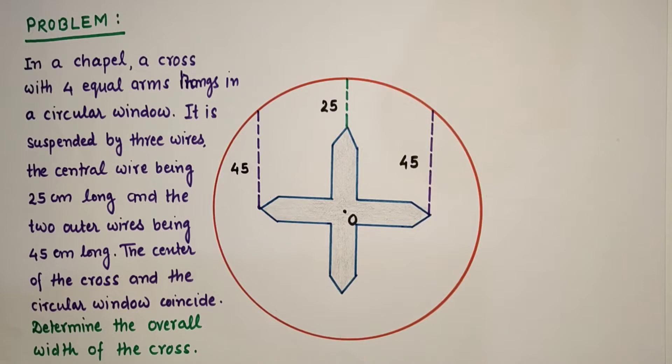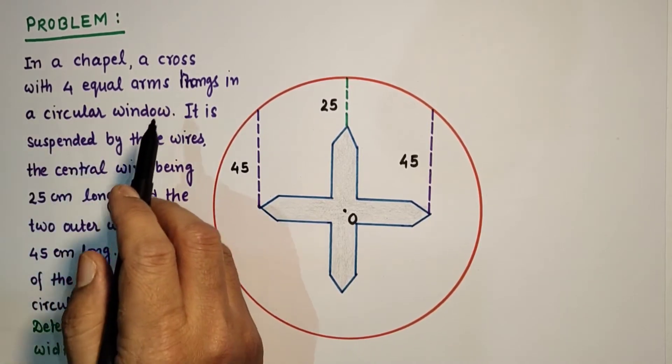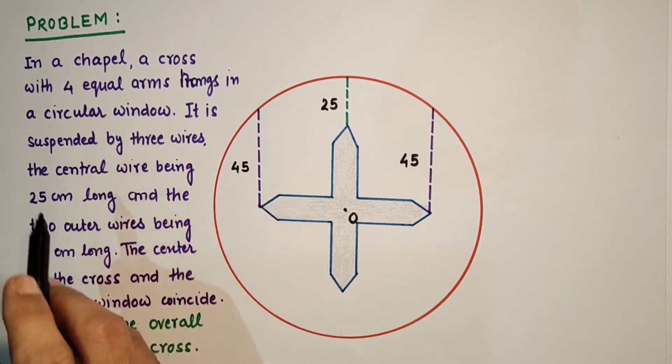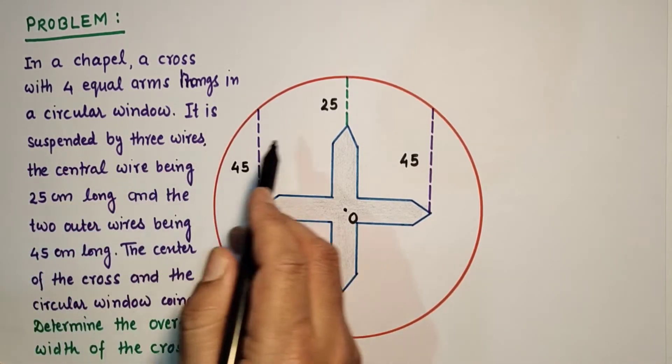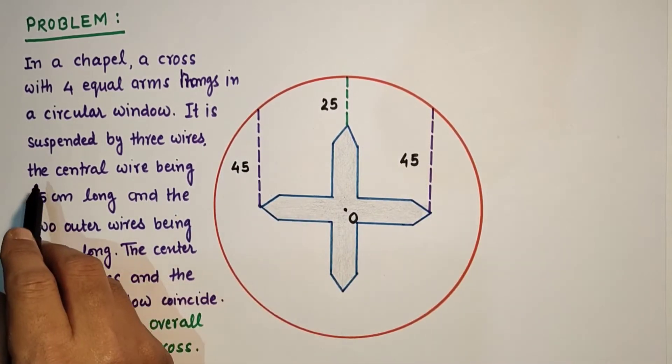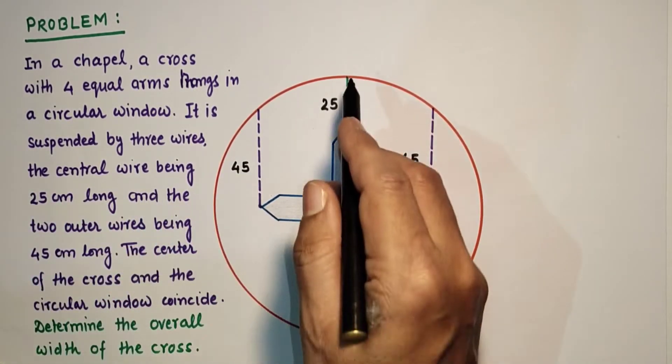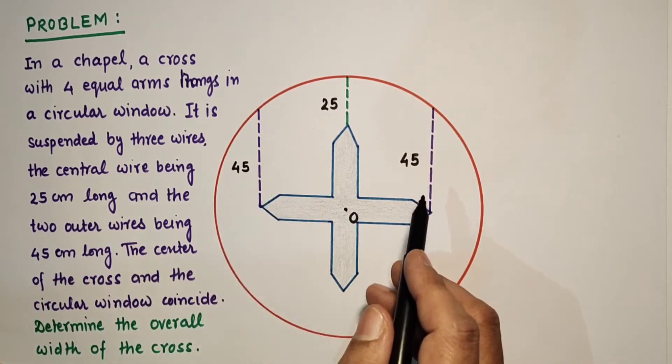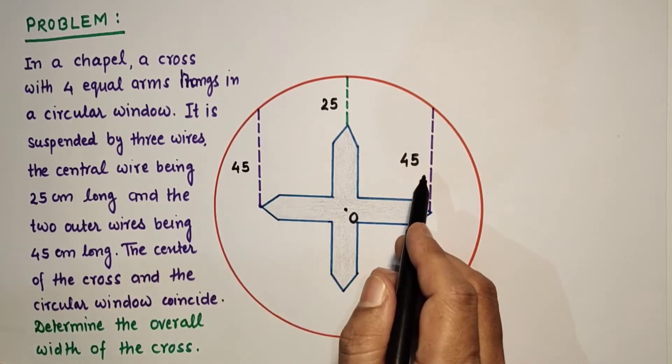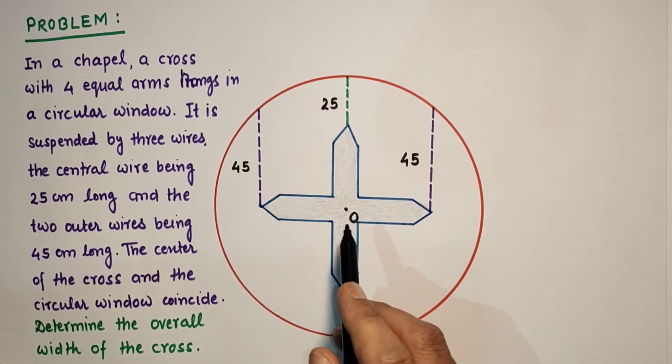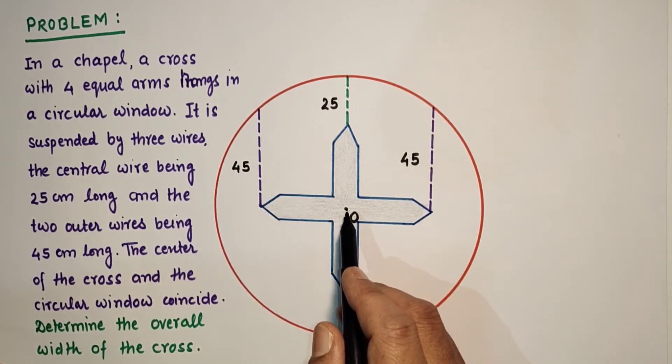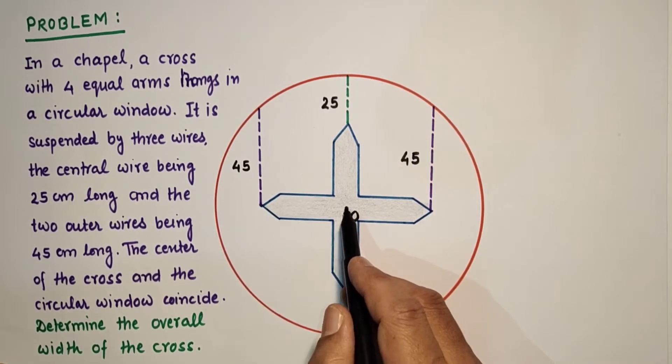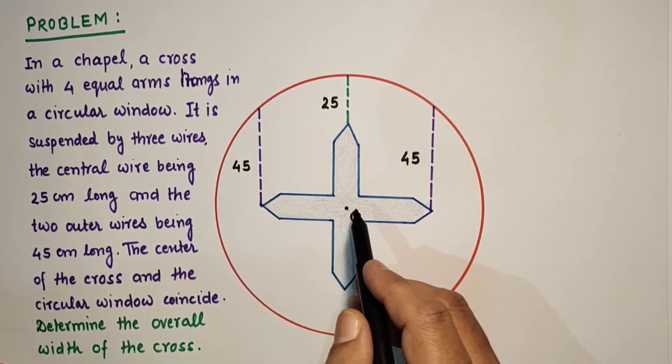This is the question given that in a chapel, a cross with 4 equal arms hangs in a circular window. It is suspended by 3 wires. The center wire being 25 cm long and the 2 outer wires being 45 cm long. The center of the cross and the circular window coincide, and the center is O.